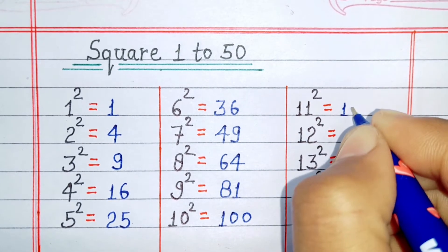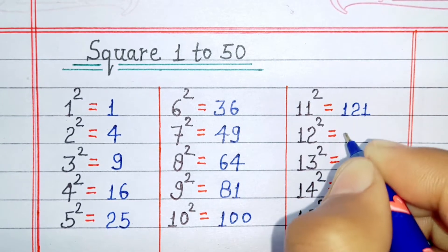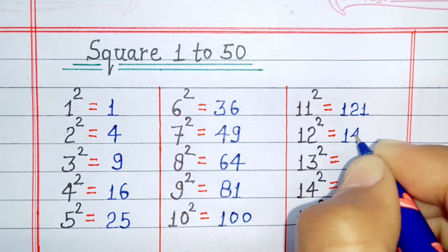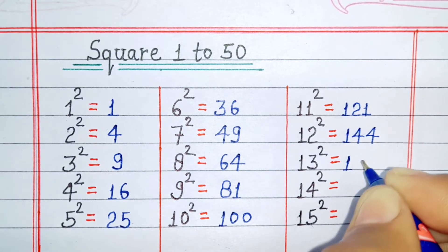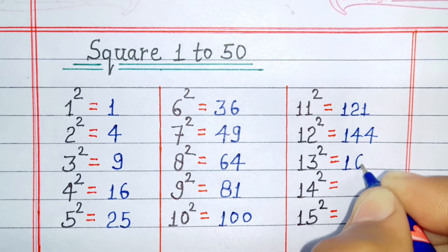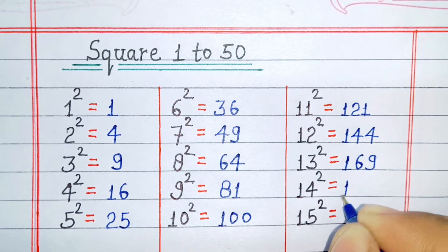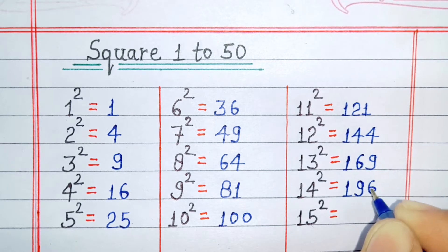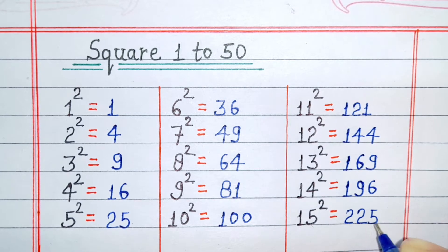Square of 11 is 121. Square of 12 is 144. Square of 13 is 169. Square of 14 is 196. Square of 15 is 225.